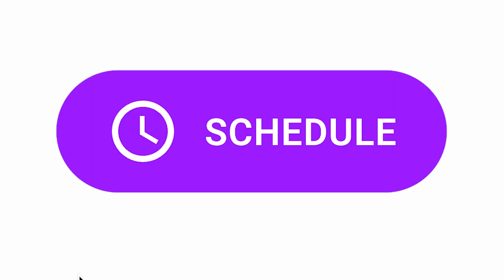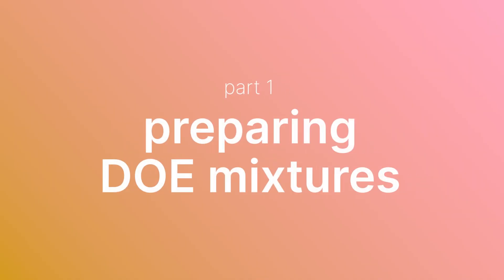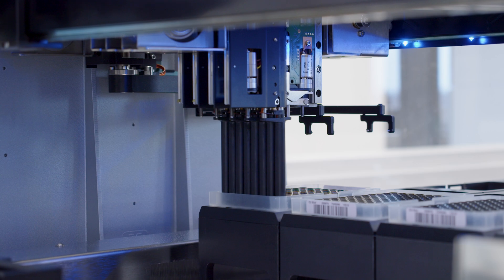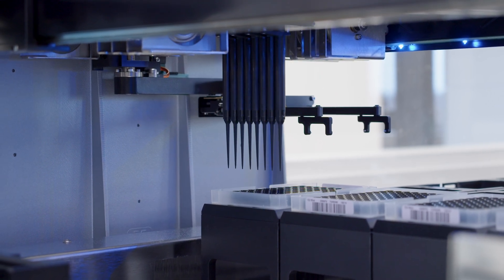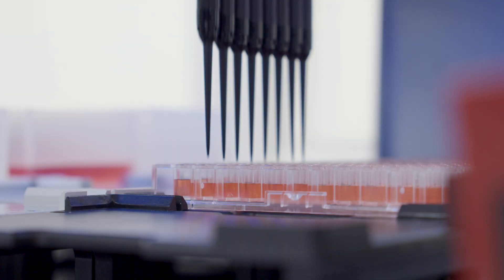Then, with the click of a button, we can send that script to the lab and press run. First, the Hamilton star uses its 8 channels to create the DOE designed neural stem cell media mixtures in 96 well plates.